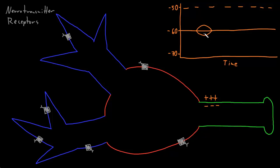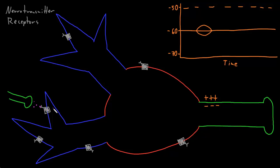To understand how these graded potentials occur, I need to introduce a new type of ion channel: neurotransmitter receptors. Neurotransmitter receptors are found at synapses, where the axon terminal of another neuron releases neurotransmitter molecules into the synapse, and they bind to these neurotransmitter receptors. Many neurotransmitter receptors are a type of ligand-gated ion channel, which means that unlike leak channels, which are always open, these channels are gated — closed most of the time until their ligand, which in this case is a neurotransmitter, binds to the receptor. Then the ion channel opens and ions may pass across the membrane through the channel.